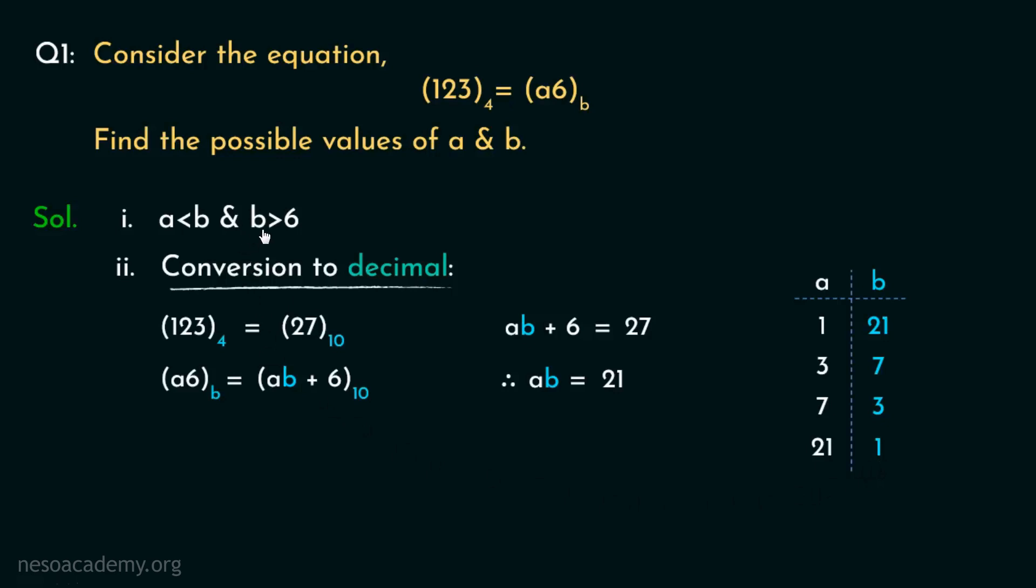Now from the conditions, b has to be greater than 6. Now in all these sets, only these two qualify to be the possible values of a and b, because other than 21 and 7, the rest, that is 3 and 1, aren't greater than 6. So, the possible values of a and b are either 1 and 21 or 3 and 7. Interesting, right?